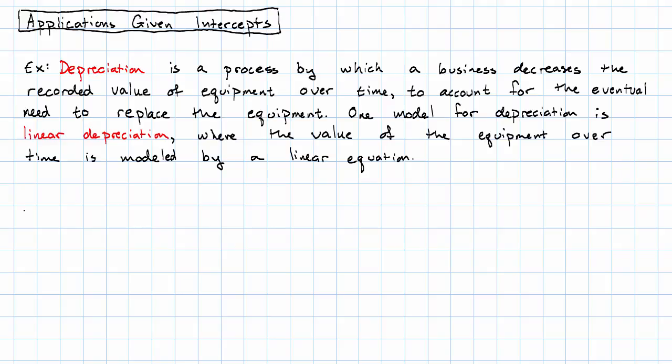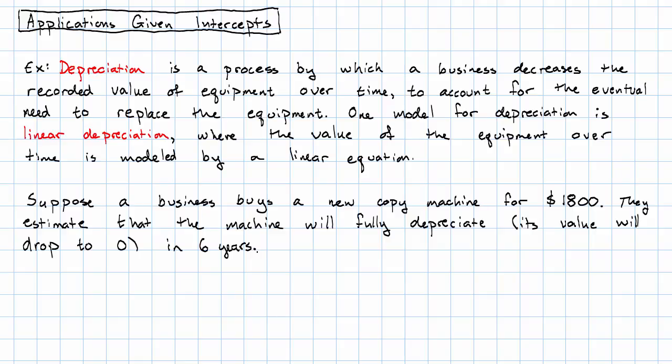So how do we do this? Suppose a business buys a new copy machine for $1,800 and they estimate that the machine will fully depreciate. That means its value will drop to zero in six years.